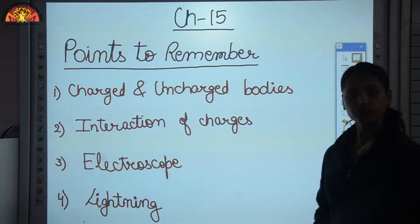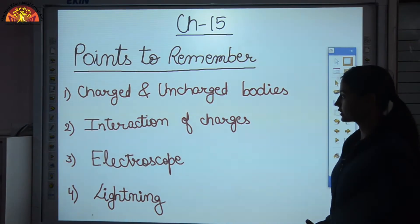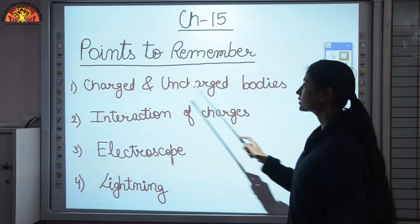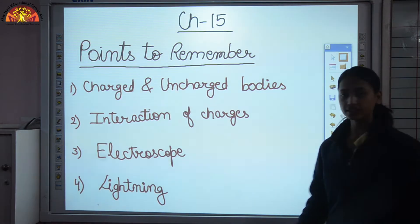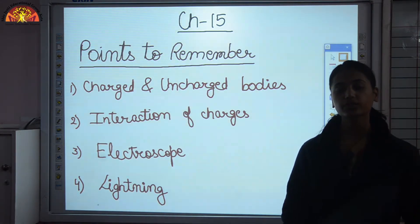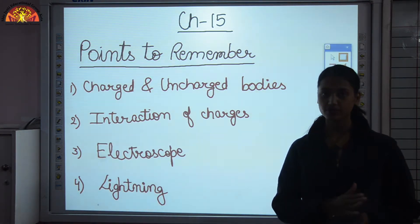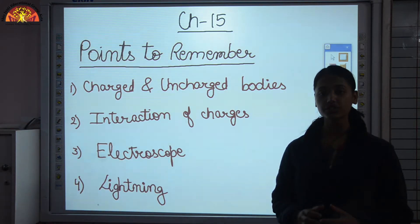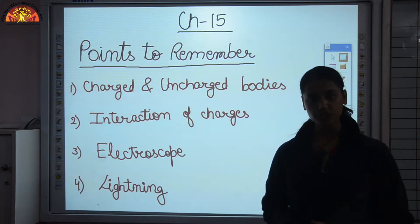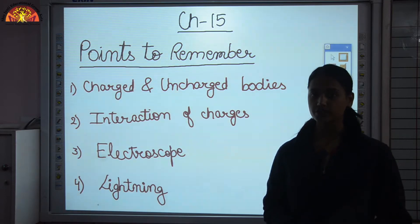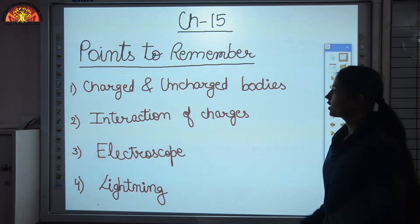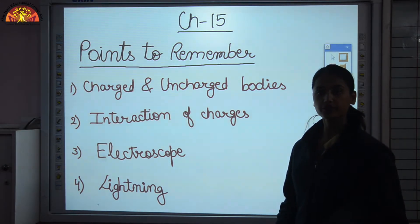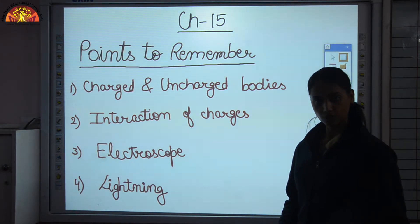Here is a list of a few important points which need to be remembered. In this chapter we discussed charged and uncharged bodies. In nature there are only two types of bodies — charged or uncharged. Initially all bodies are uncharged unless we charge them. You can make any uncharged body charged by rubbing or friction.